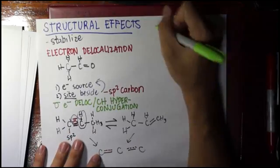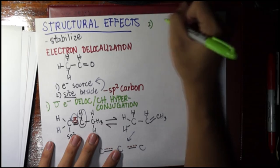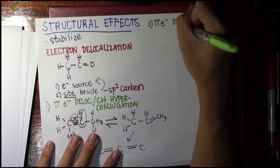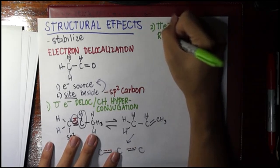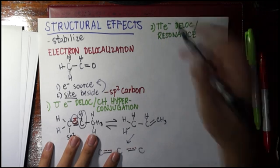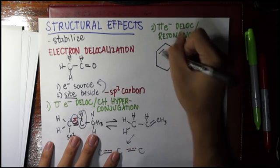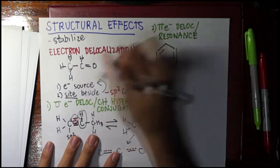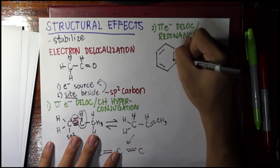If the source is a pi electron, we say that this is pi electron delocalization, but it has a common name and that is resonance. The most used example is this one—benzene. How do we say that we have satisfied this?